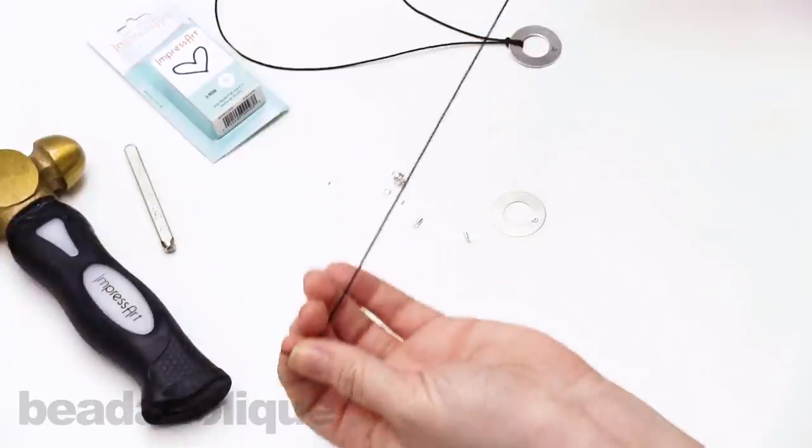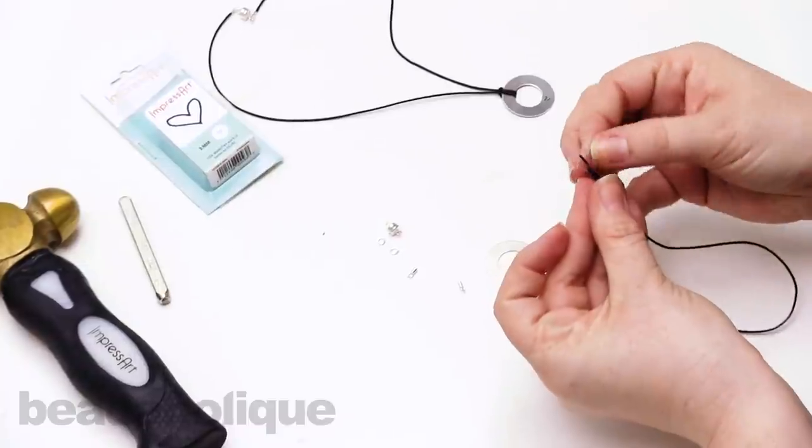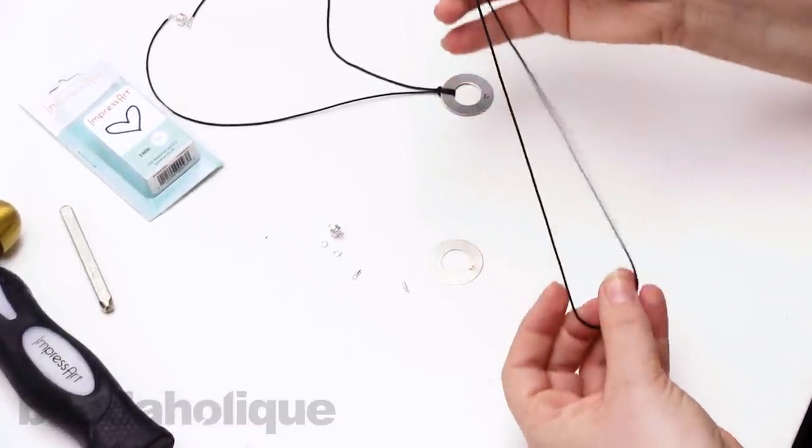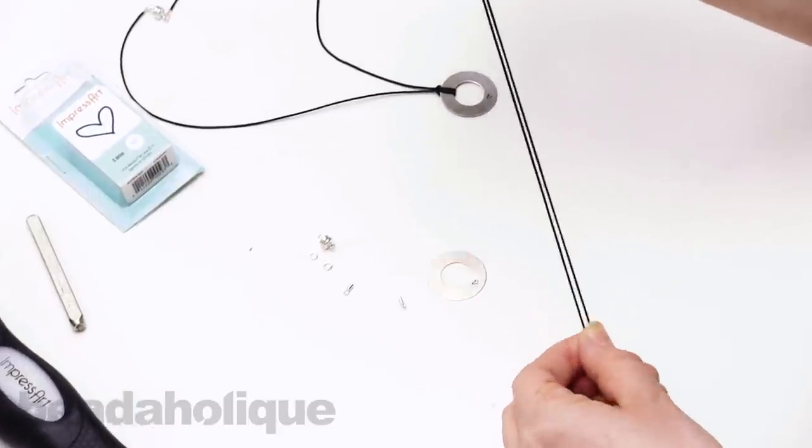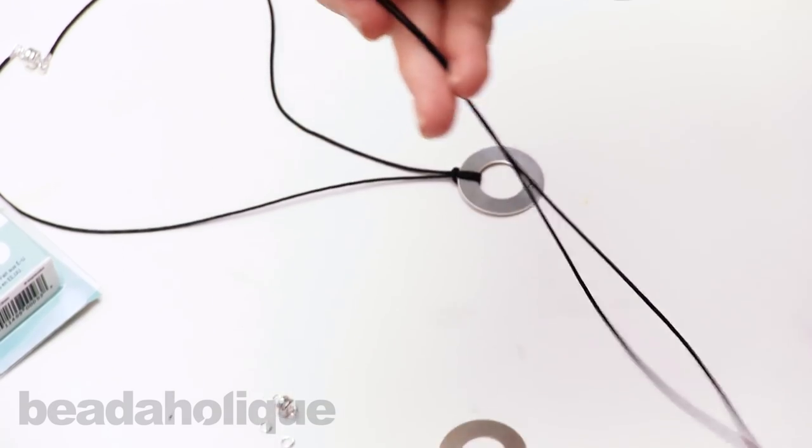And now you can set your ruler and your cord aside. So I have my length of about 16 inches here. Now what you're going to want to do is match up those two ends. String that down. And now we're going to tie a lark's head knot over our little donut here.